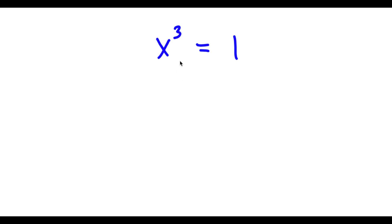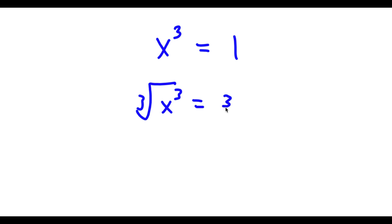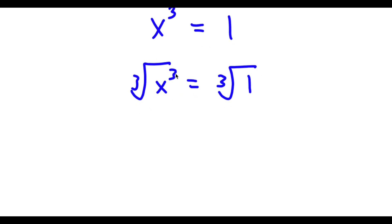In this problem, I have x to the power of 3 equals 1. I'm going to first start by taking the cube root on both sides. So I have the cube root of x to the power of 3, which is x, and the cube root of 1, which is simply equal to 1.